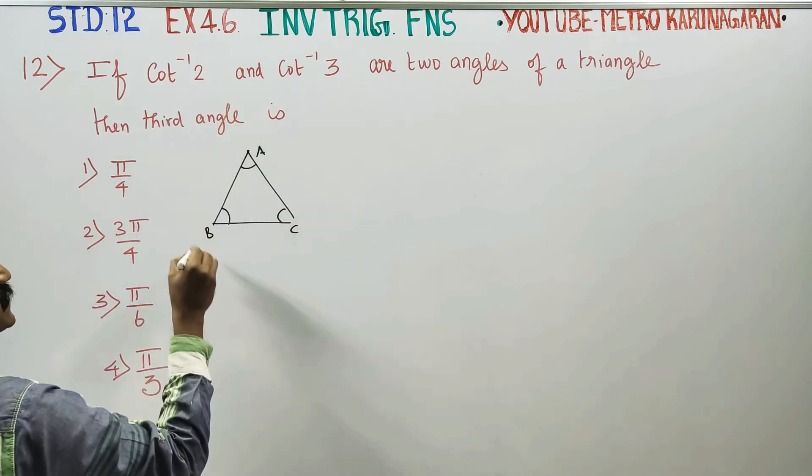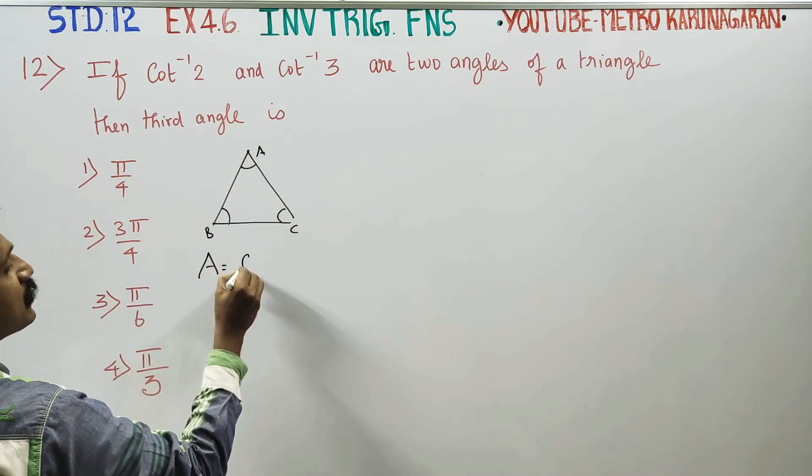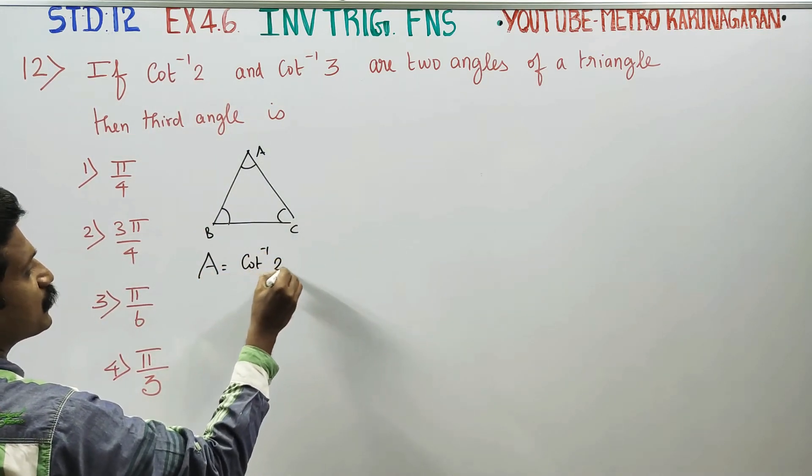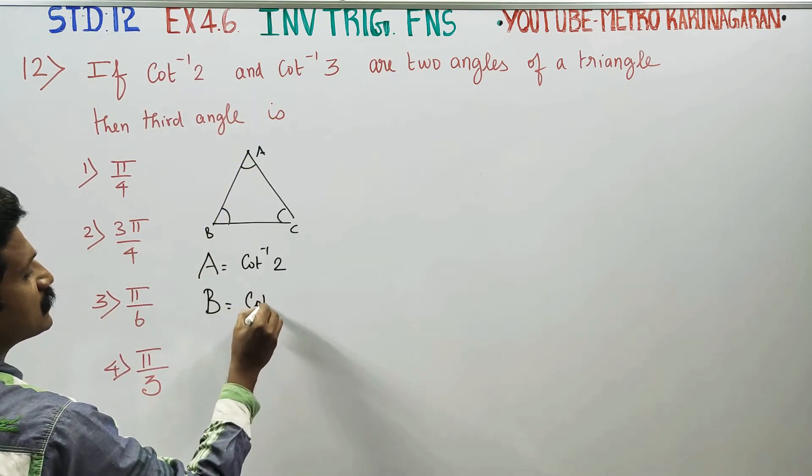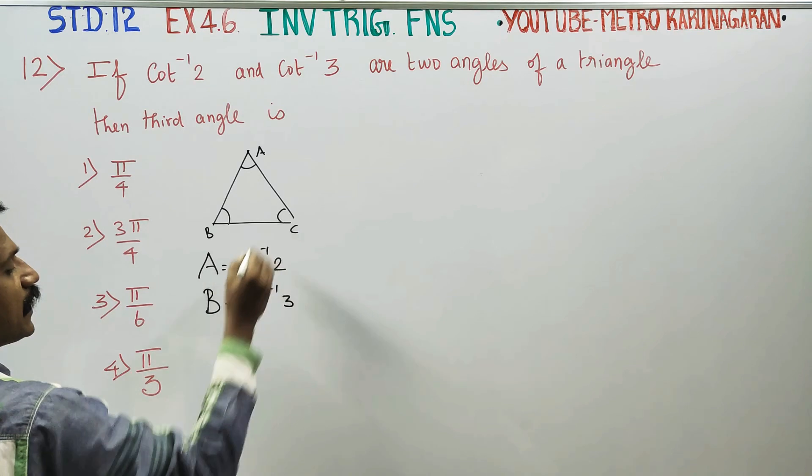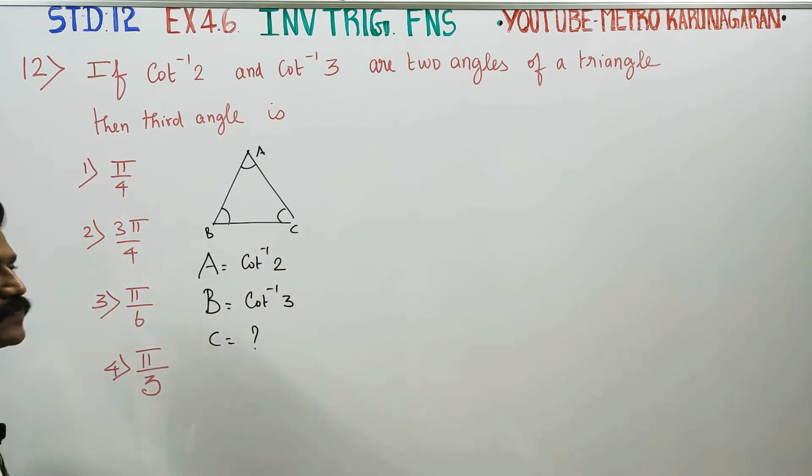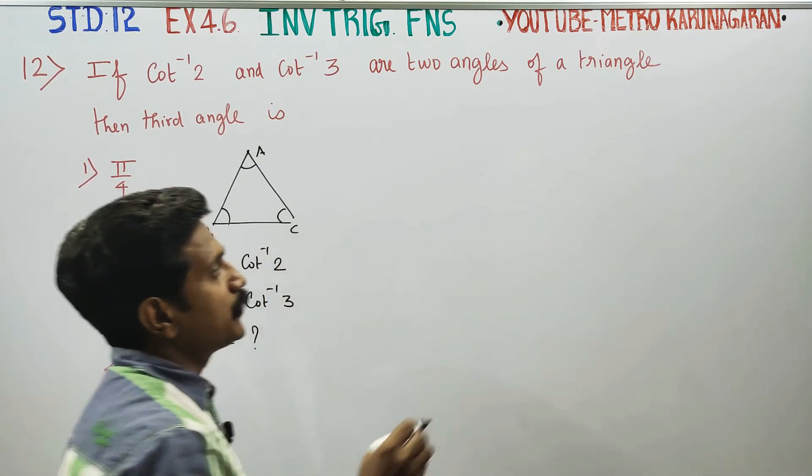Let us consider this as angle A. Angle A is equal to cot inverse of 2. Angle B is equal to cot inverse of 3 in the triangle. I want what is C, right? Now, C would I value?